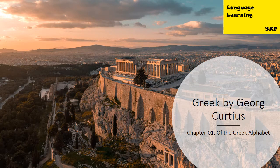Of the Greek Alphabet, from Elucidations of the Students' Greek Grammar by Georg Kurtzius. Read for LibriVox Learning Collection, Volume 3. This is a LibriVox recording. All LibriVox recordings are in the public domain. For further information or to volunteer, please visit LibriVox.org.